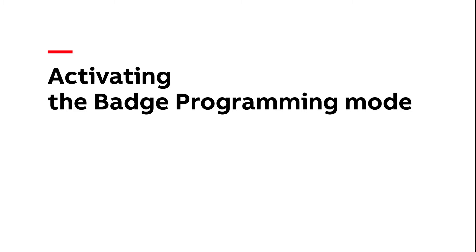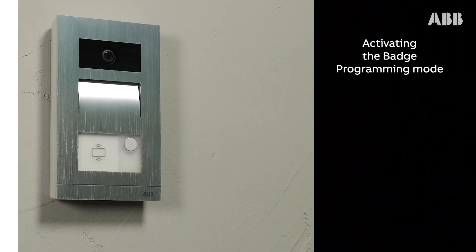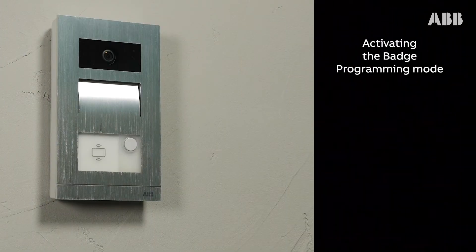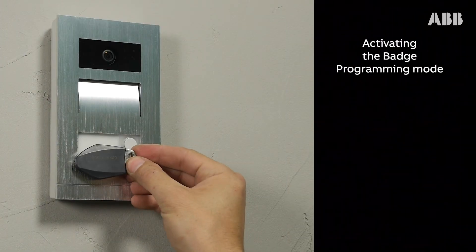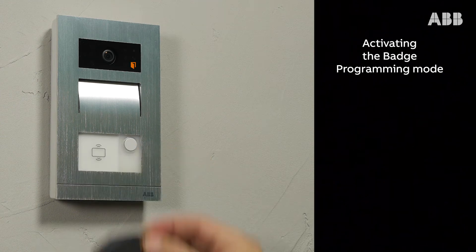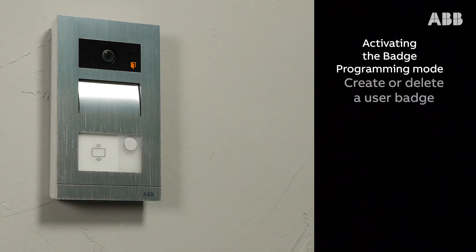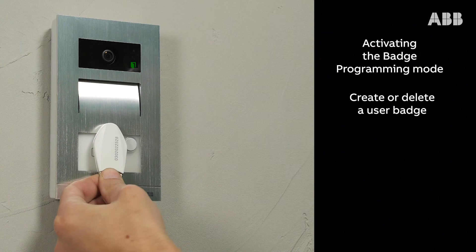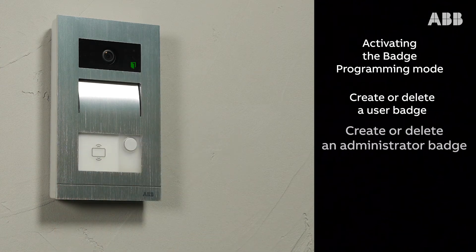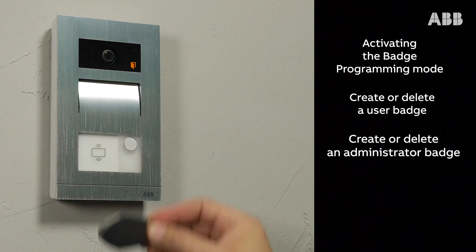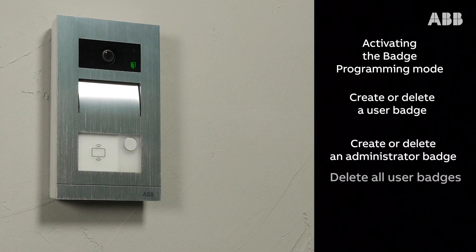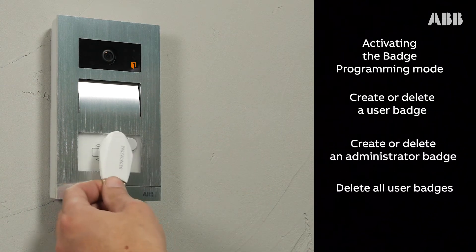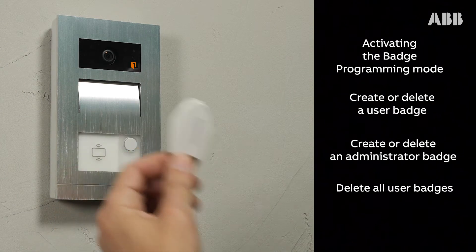To activate the badge programming mode, pass the administrator badge in front of the badge reader. The LED turns orange. You can now create or delete a user badge, create or delete an administrator badge, or delete all user badges.